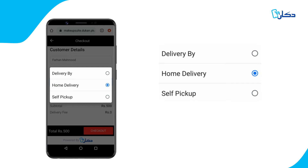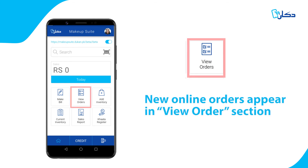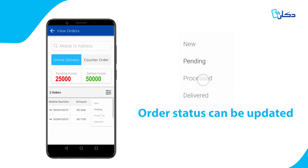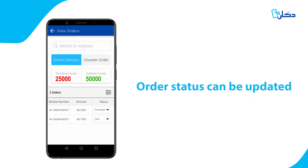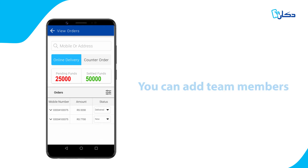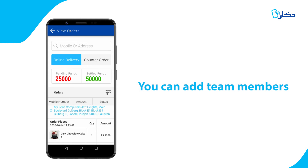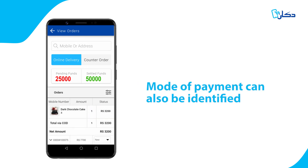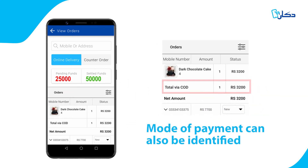Dukan supports delivery, pickup and counter sales. When you get new online orders, they appear in your View Orders section. You can manage orders by updating the status, allowing you and your team members to understand the status as it gets processed and ultimately delivered. You can add as many team members as you'd like to collaborate on your deliveries. You will also see whether it was paid for online or if the order is cash on delivery.